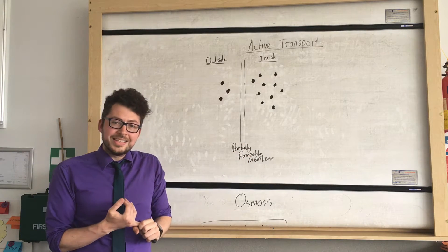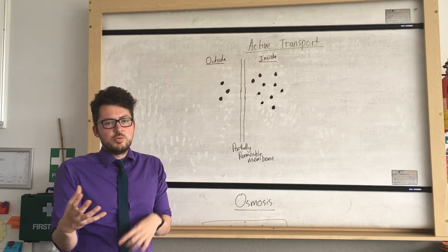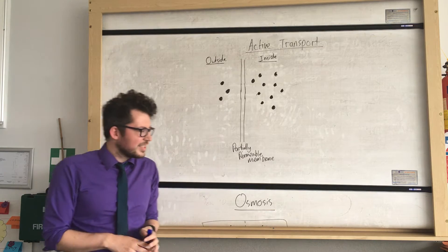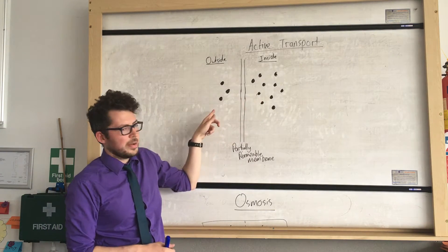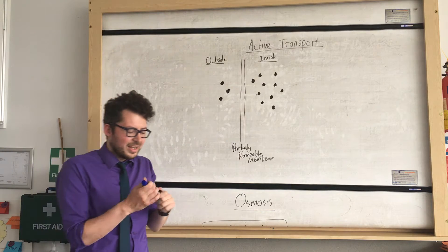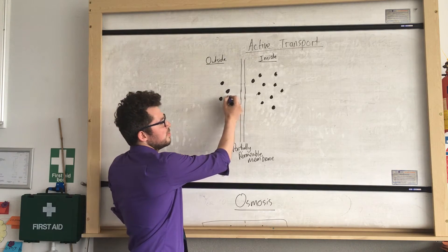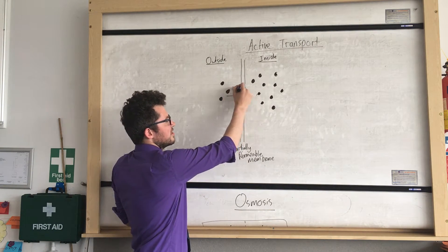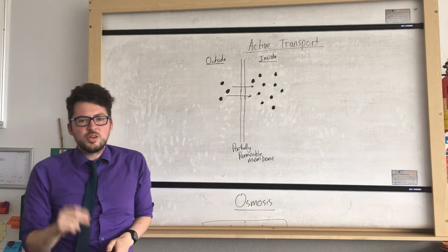Now all partially permeable means is it allows some materials through but not others. So in this example, diffusion would occur this way. But active transport allows the particles to move from this side to this side. So that would be active transport.